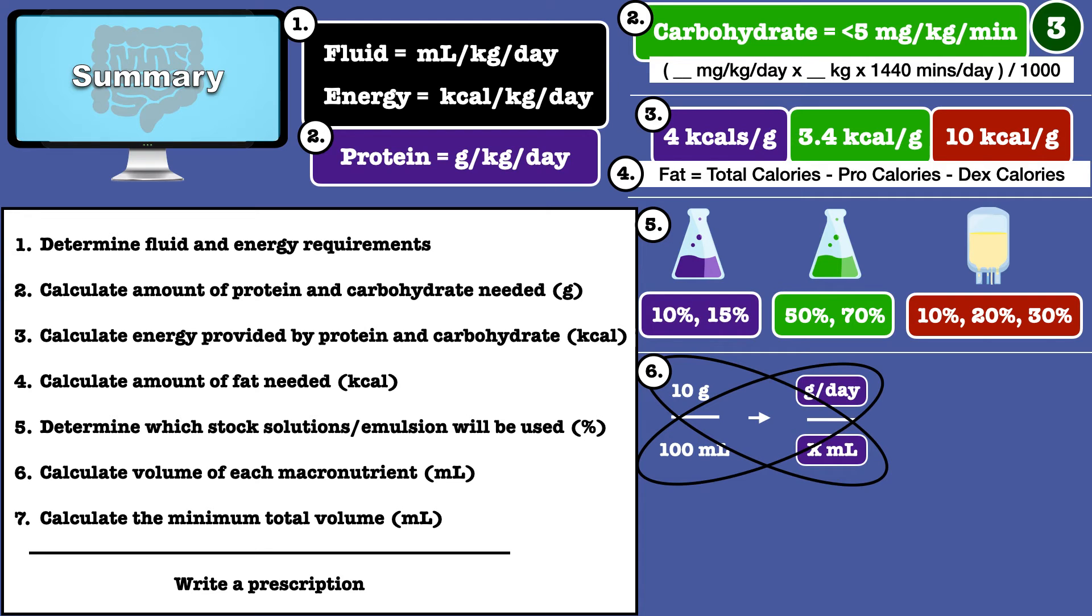A different way to get the volume of fat is to know the amount of calories per milliliter of each available emulsion. Then you take the calories you need from fat and divide it by calories provided per milliliter, 1.1, 2, or 3.